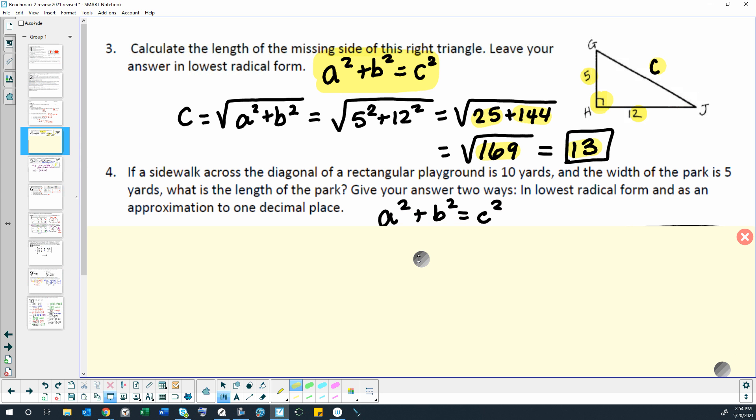Let's look at question 4. If a sidewalk across the diagonal of a rectangular playground is 10 yards, and the width of the park is 5 yards, what is the length of the park? Give your answer in two ways: in lowest radical form and as an approximation to one decimal place.